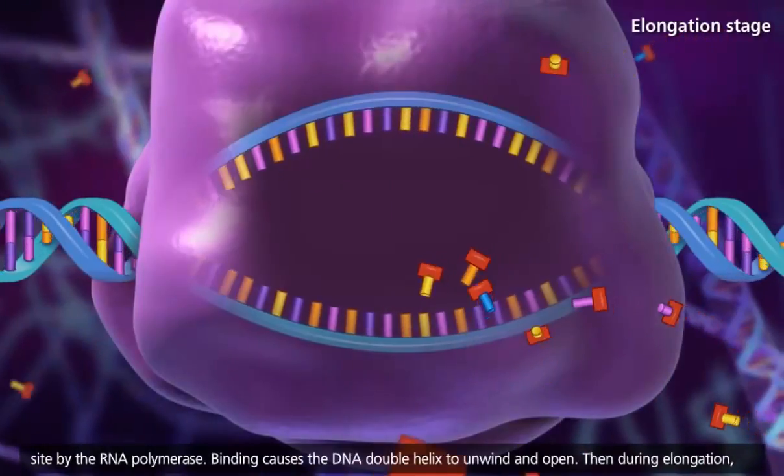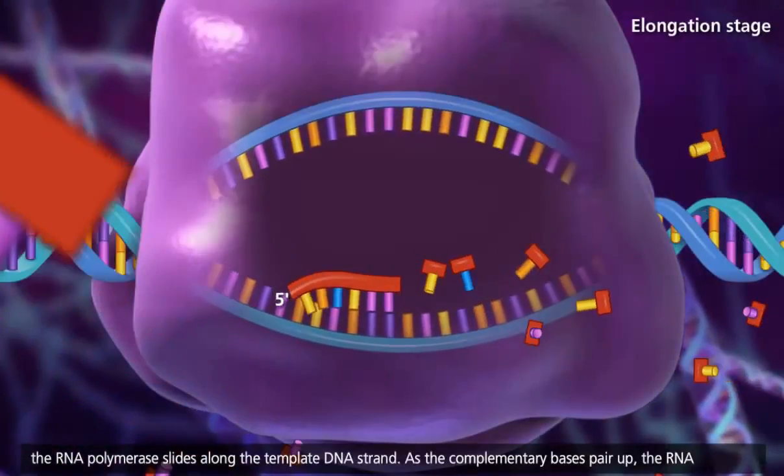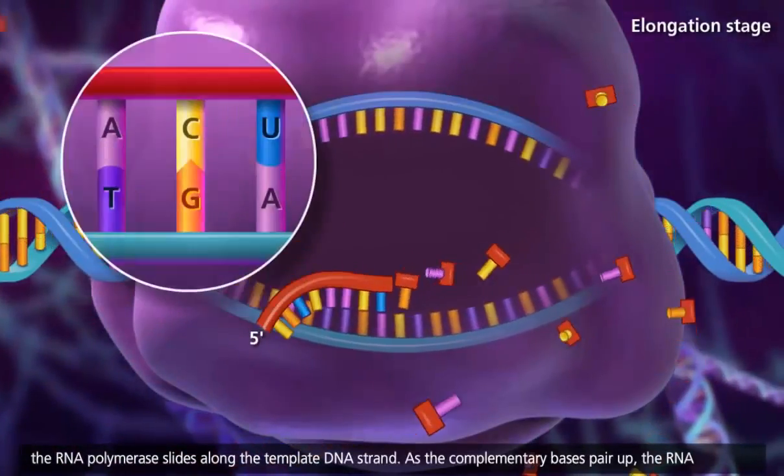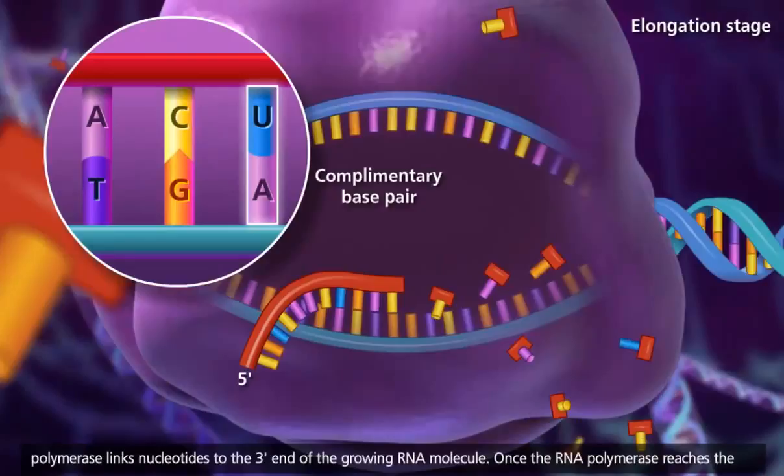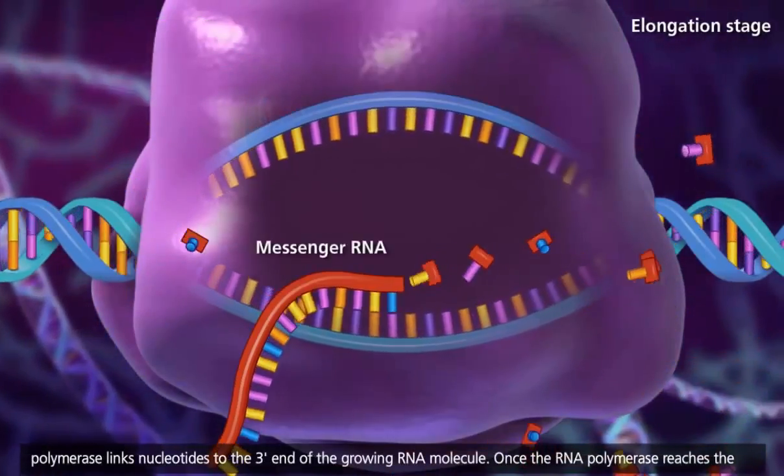Then during elongation, the RNA polymerase slides along the template DNA strand. As the complementary bases pair up, the RNA polymerase links nucleotides to the three-prime end of the growing RNA molecule.